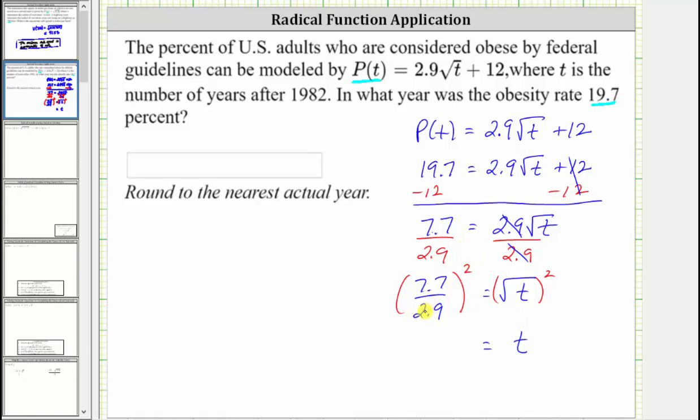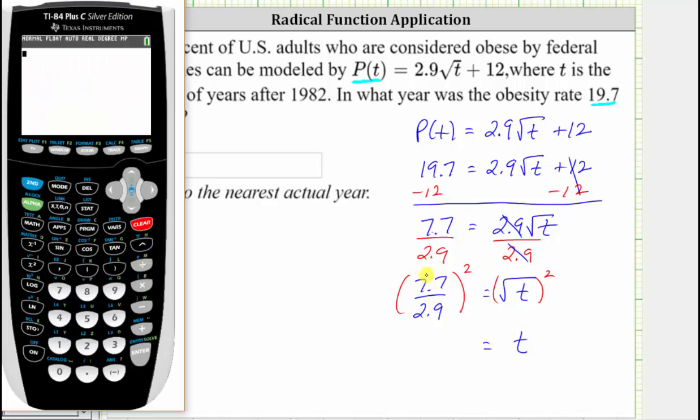Now we'll square this quotient on the calculator. We will first enter the quotient in parentheses and then square this quantity. Enter. Let's round to the hundredths place value here and say t is approximately 7.05.